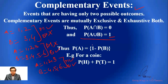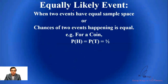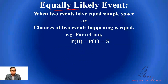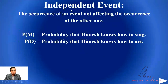From that you can get P(A) plus P(B) equals 1. Next: equally likely events. For example, the probability of getting a head or a tail — both are 1/2, fifty-fifty. When the chances of happening are equal, the events are called equally likely. Last one: independent events — two events which are independent of each other.